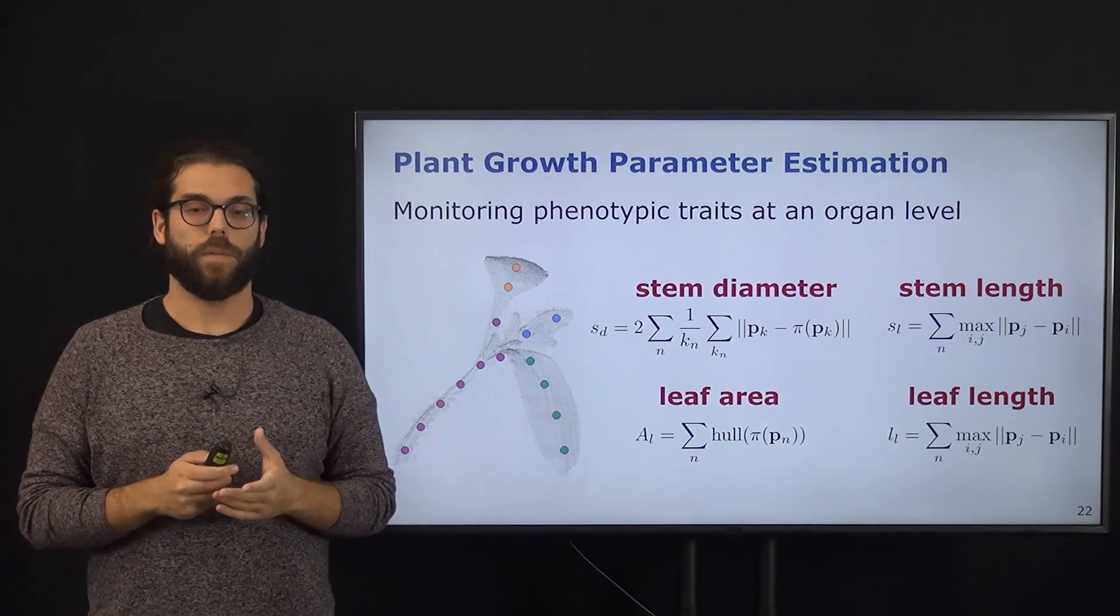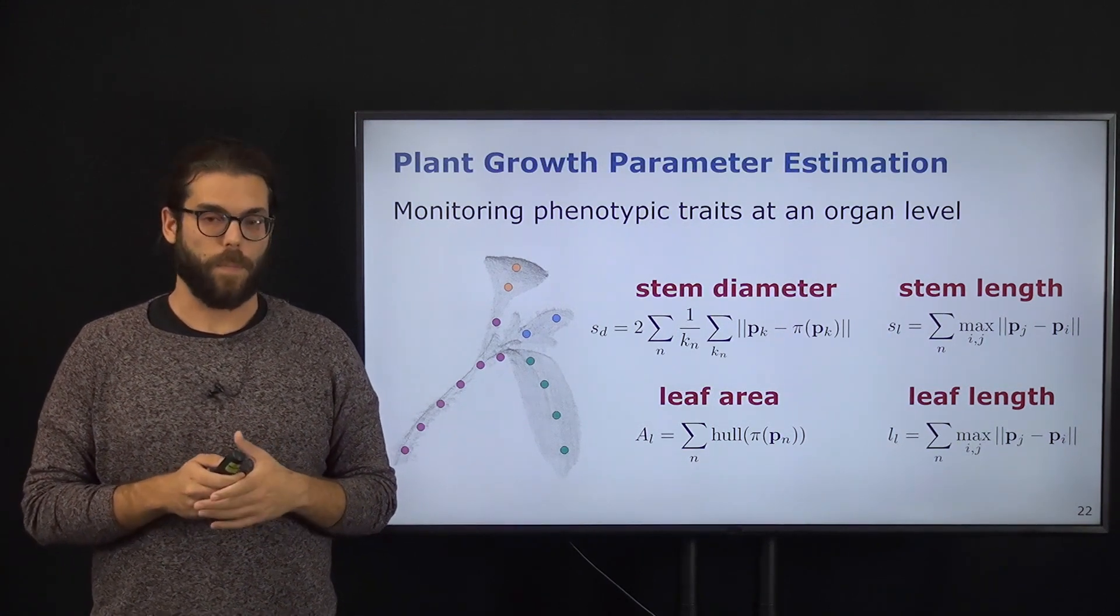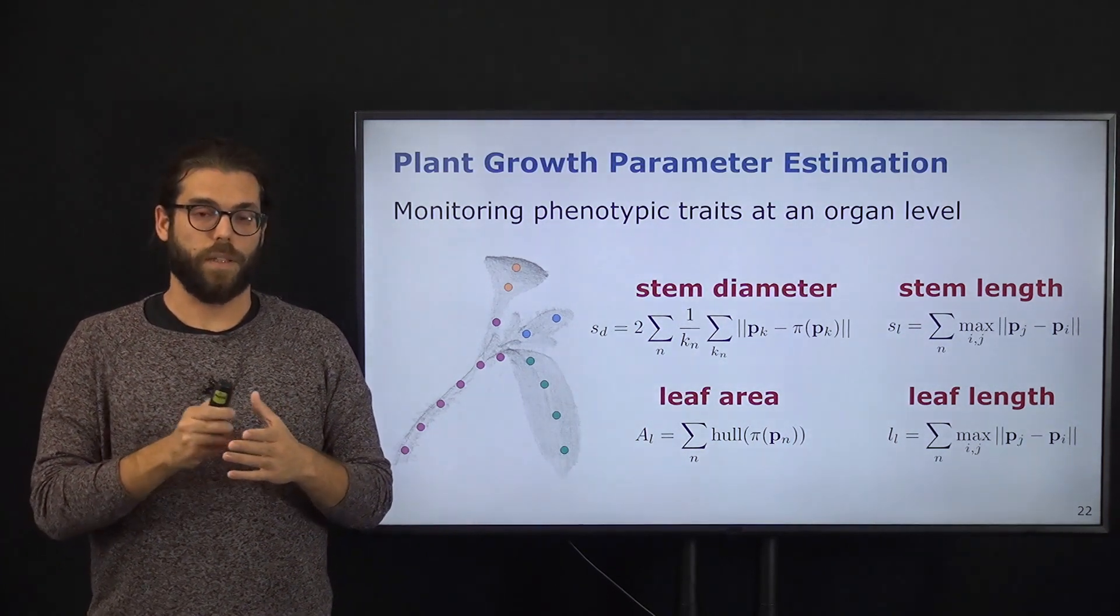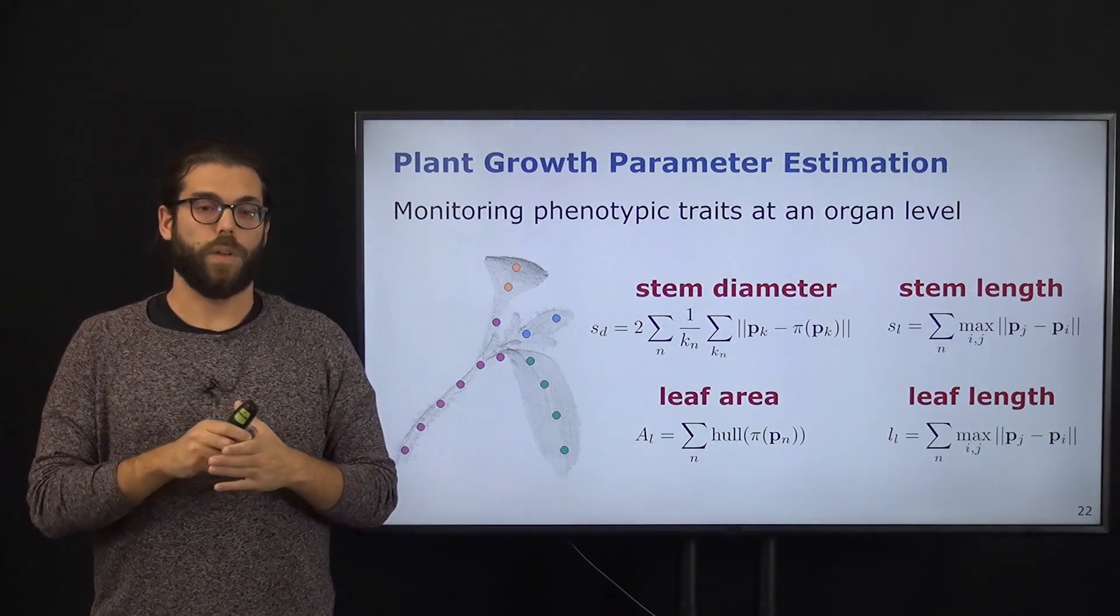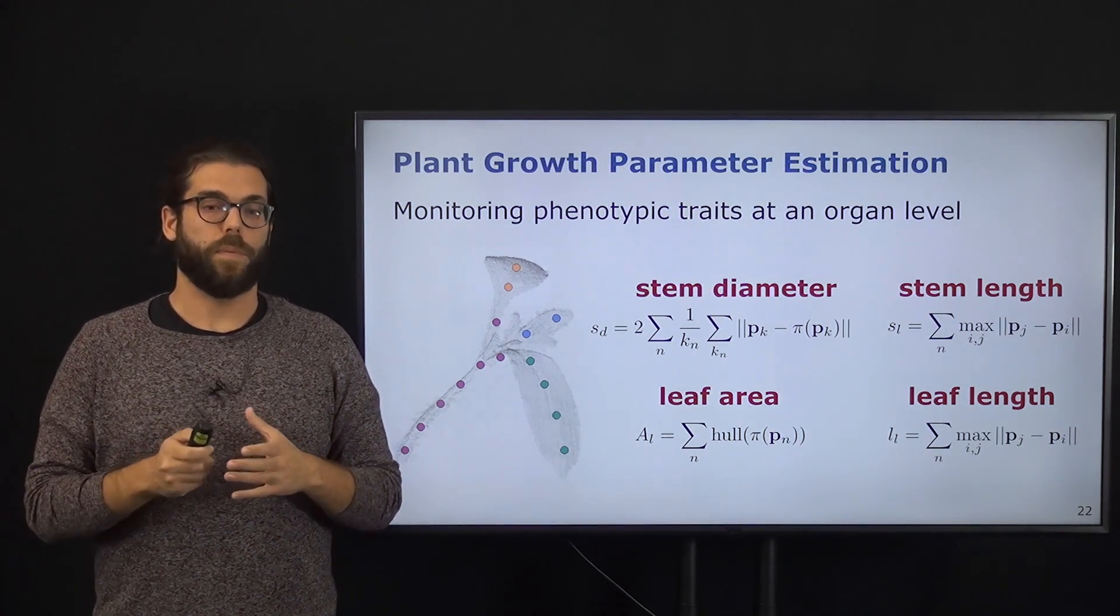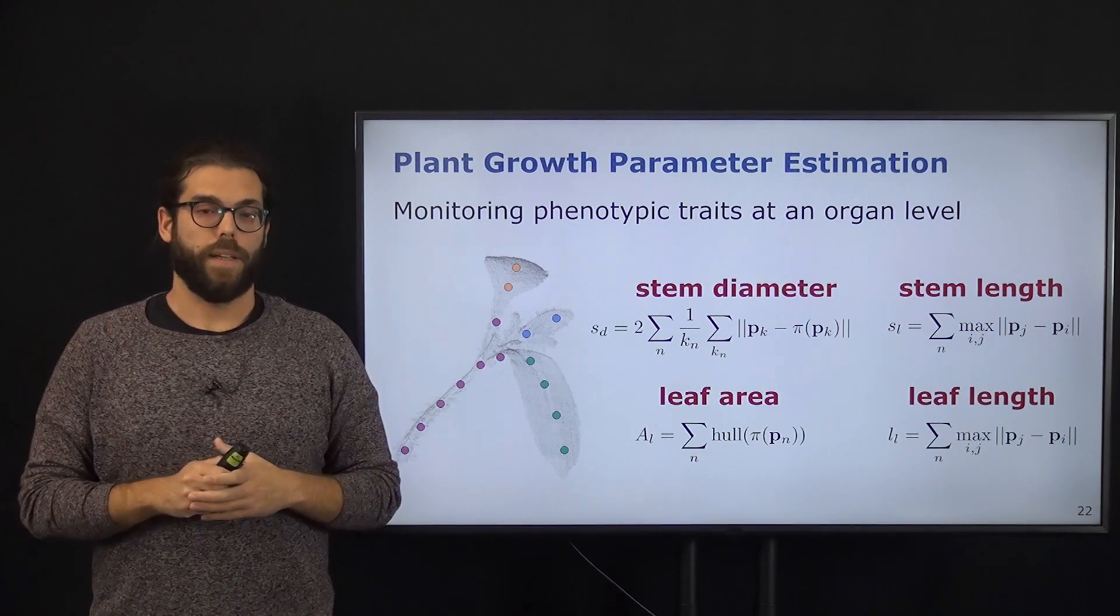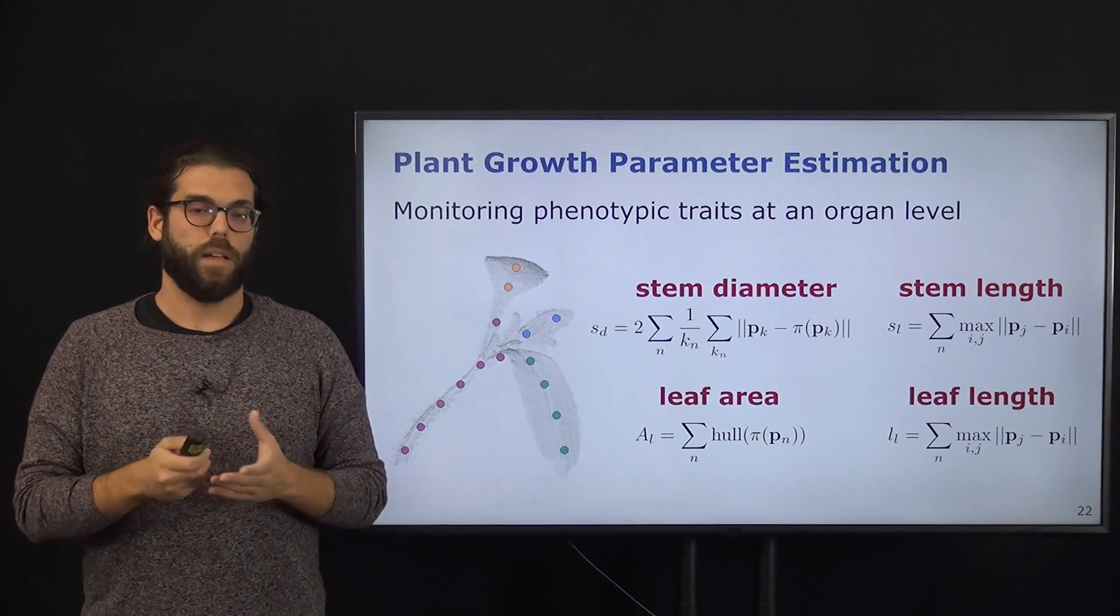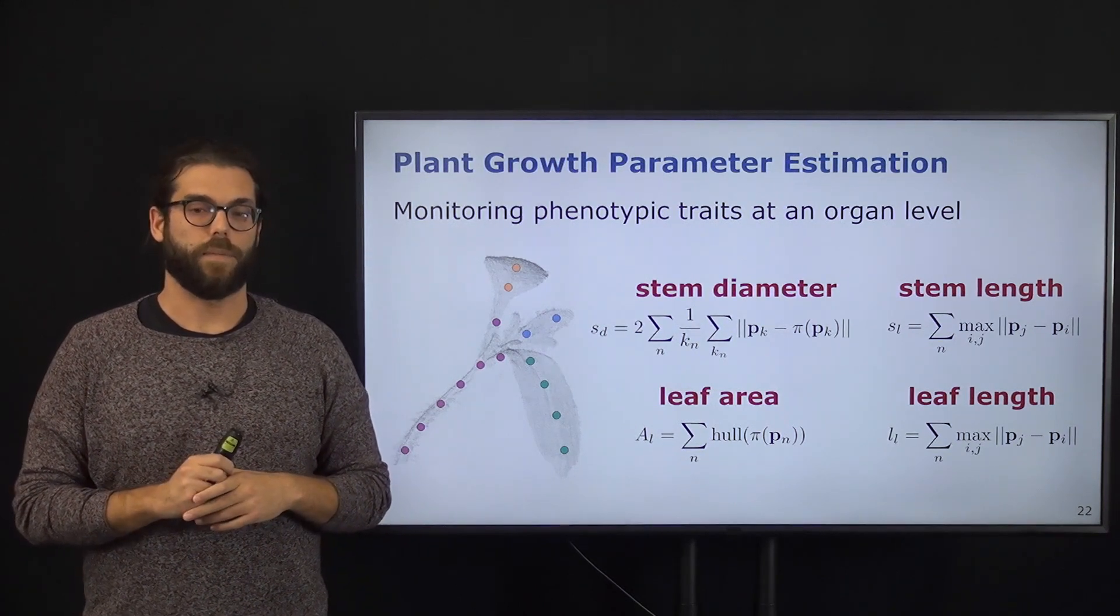In a similar way, we compute the leaf area. We consider each point in the skeleton of one leaf, compute the main plane of that part of the leaf, and then project all the 3D points into that plane. In this way, we're able to compute a convex hull in 2D and get the area of the leaf.